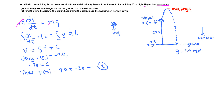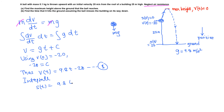For part A, we want to find the maximum height above the ground. At the maximum height, the velocity becomes 0. We will set velocity equal to 0 to find the time to reach maximum height, then find the position. Since velocity is the derivative of position, we integrate both sides to get the position function: integrate 9.8t minus 20 with respect to time.